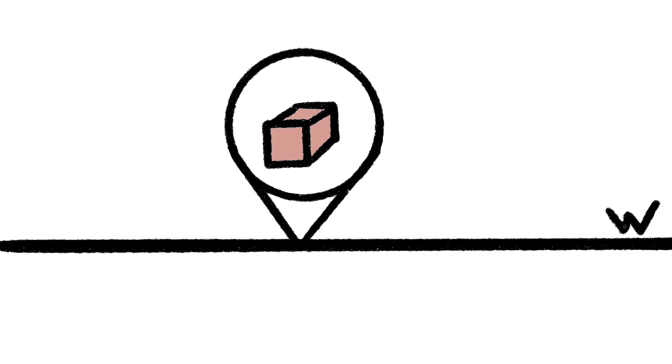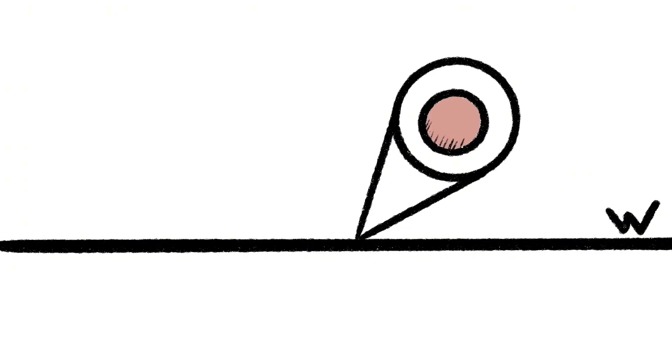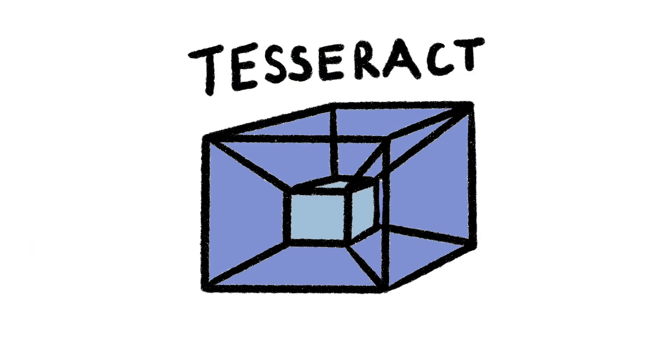Similarly, for a four-dimensional space, imagine a line representing the fourth dimension. At each point on this line, there exists some contour, but this contour is now a three-dimensional object, not two-dimensional. Let's use this technique to construct a four-dimensional object, a tesseract.